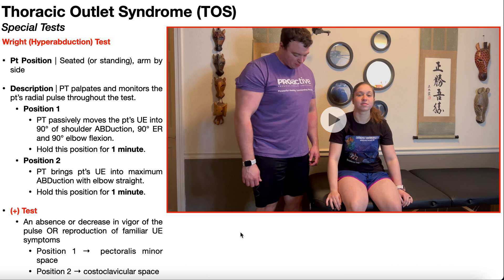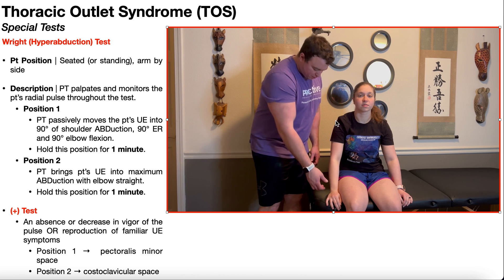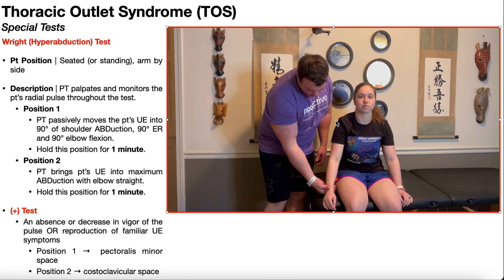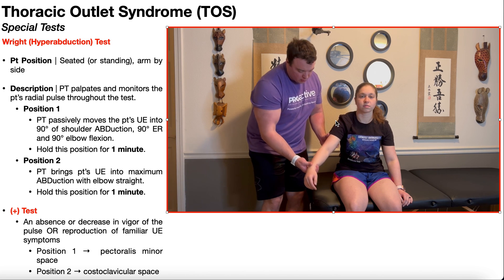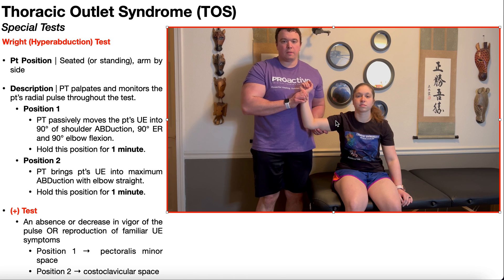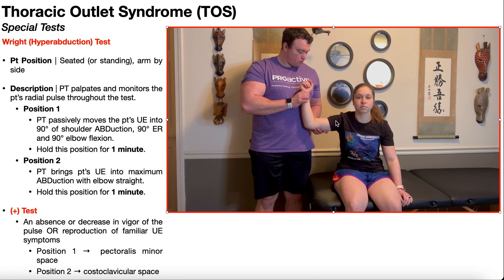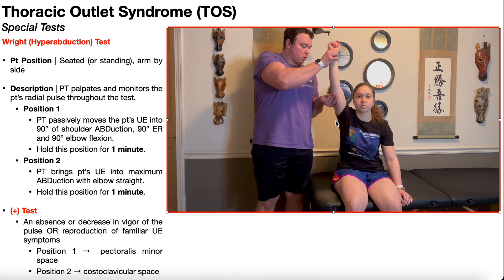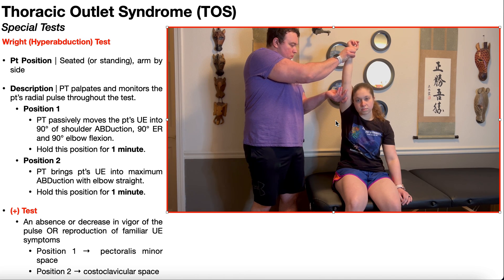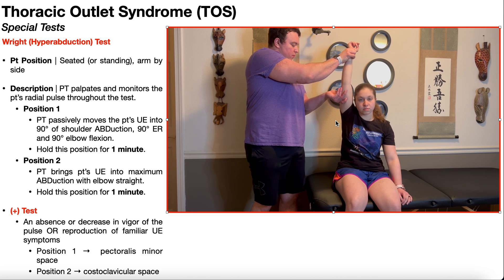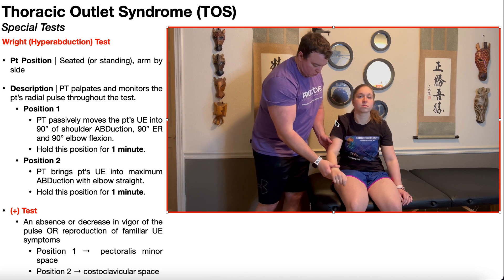Let's take one more look at the Roos or hyperabduction test. The patient's going to be seated, and the PT is going to palpate and monitor the patient's radial pulse — particularly the strength of the pulse — throughout the test. They're then going to position the patient's upper extremity into 90 degrees of shoulder abduction, external rotation, and 90 degrees of elbow flexion, holding that position for one minute while monitoring for signs and symptoms consistent with thoracic outlet syndrome. Then moving into position two, the PT brings the patient's upper extremity into maximum shoulder abduction with the elbow straight, again holding for one minute and monitoring the strength of the radial pulse and any signs and symptoms consistent with thoracic outlet syndrome.